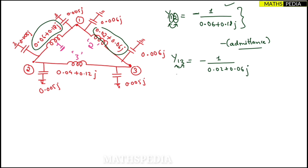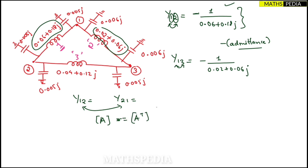Y13 = −1/(0.02 + j0.06), since that is the impedance between nodes one and three. Also note: Y-bus is a symmetric matrix, meaning Y12 = Y21 and Y13 = Y31. A symmetric matrix means A equals its own transpose.